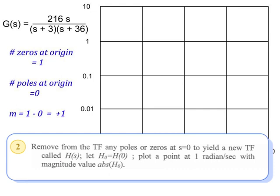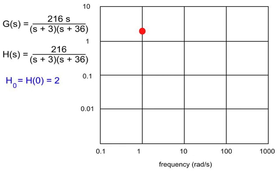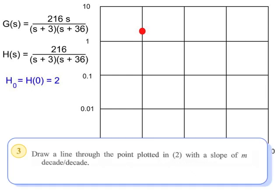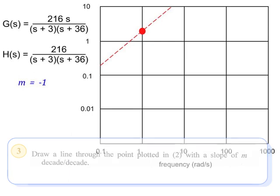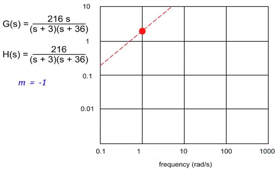For step two, we'll remove the zero that is at s equals zero to make our new transfer function H of s. Then we'll find H sub zero, and it will be equal to 2. We plot this point at 1 radian per second. We're now ready to sketch our low frequency asymptote through this point, and m was equal to 1 for this example because of the zero at the origin. So we'll plot a line of slope 1 through the point that we just found.